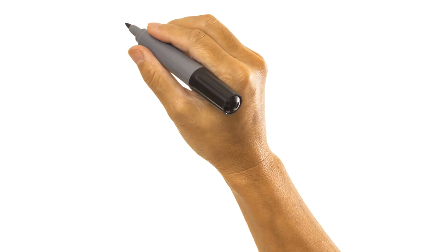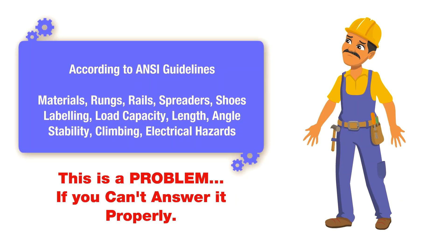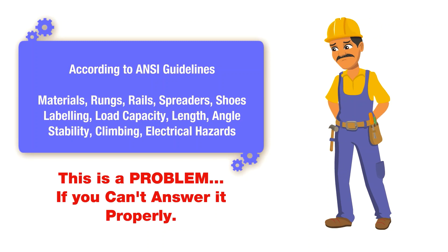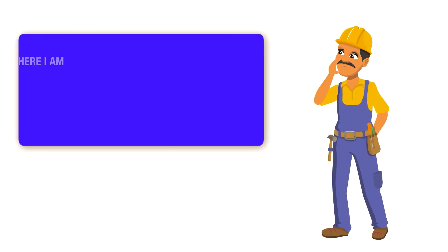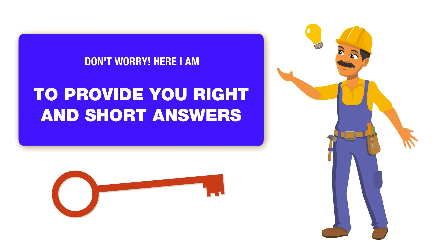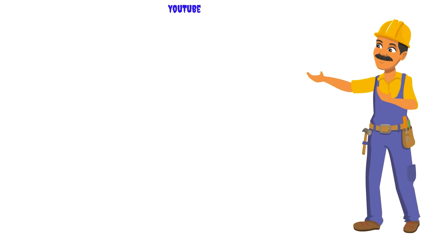Part 3 of Mastering Ladder Safety focuses on ANSI A14.3, which provides guidelines for the design, construction, testing, labeling, and safe use of fixed ladders. This video will provide all the answers for questions related to materials, rungs, rails, cleats, labeling, load capacity, length, and angles related to fixed ladders.